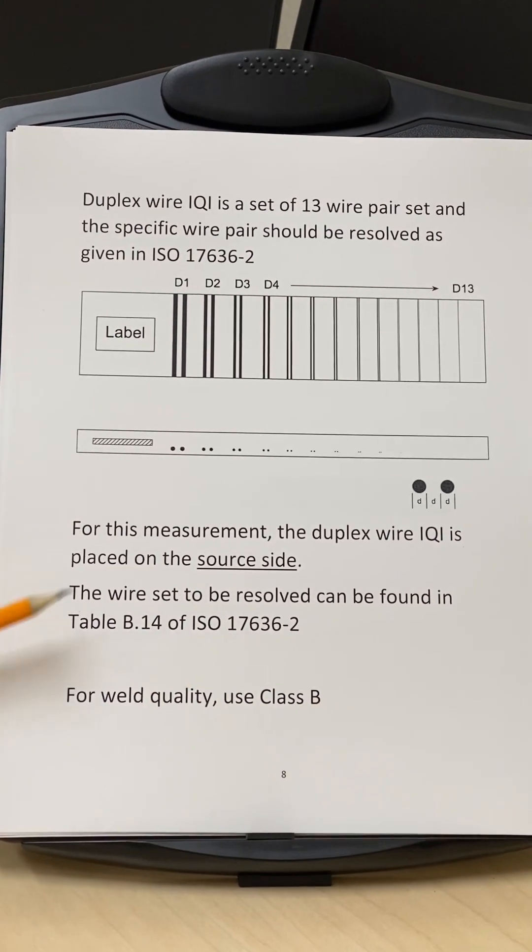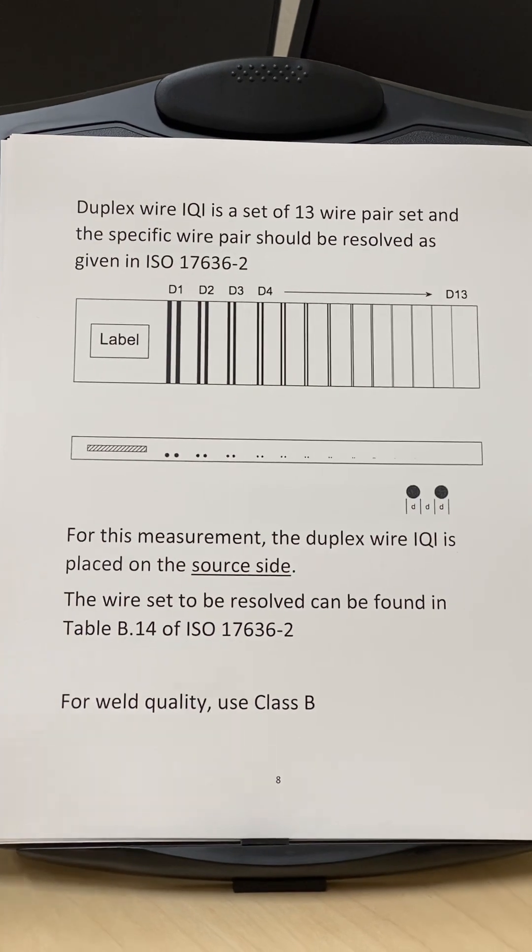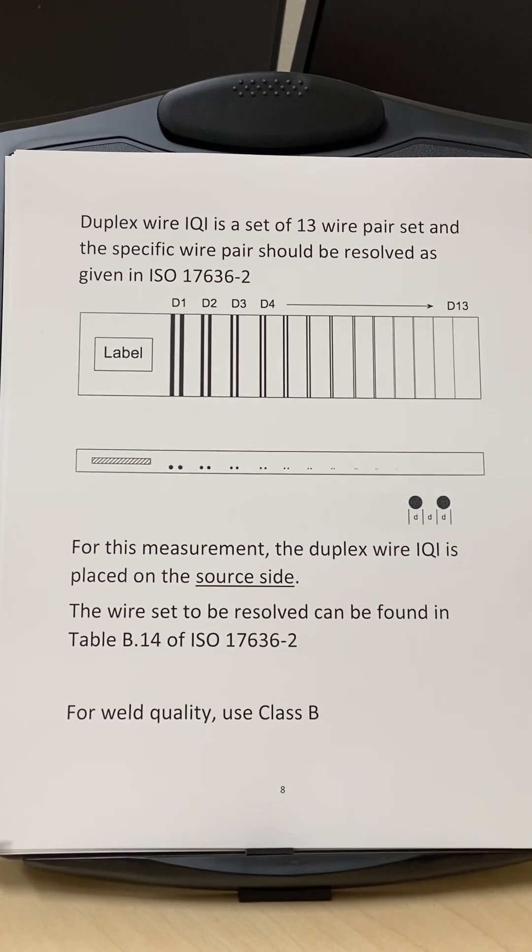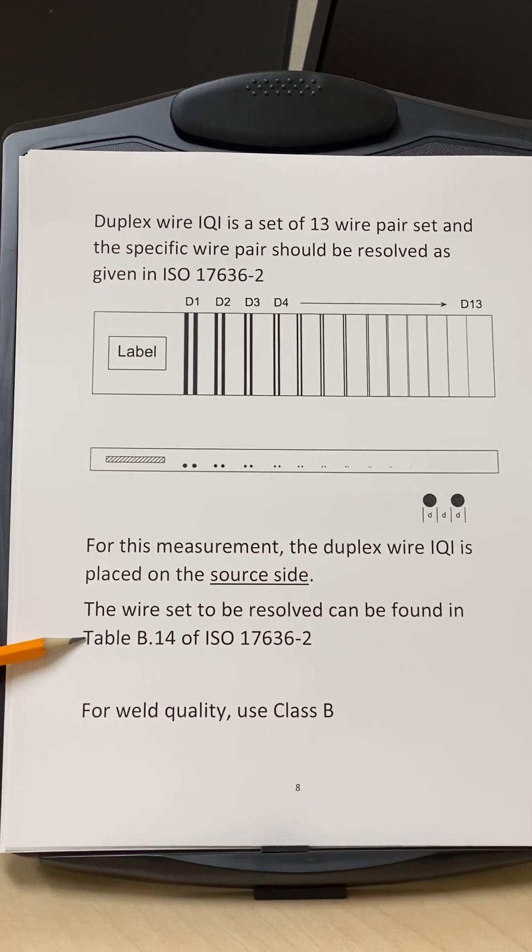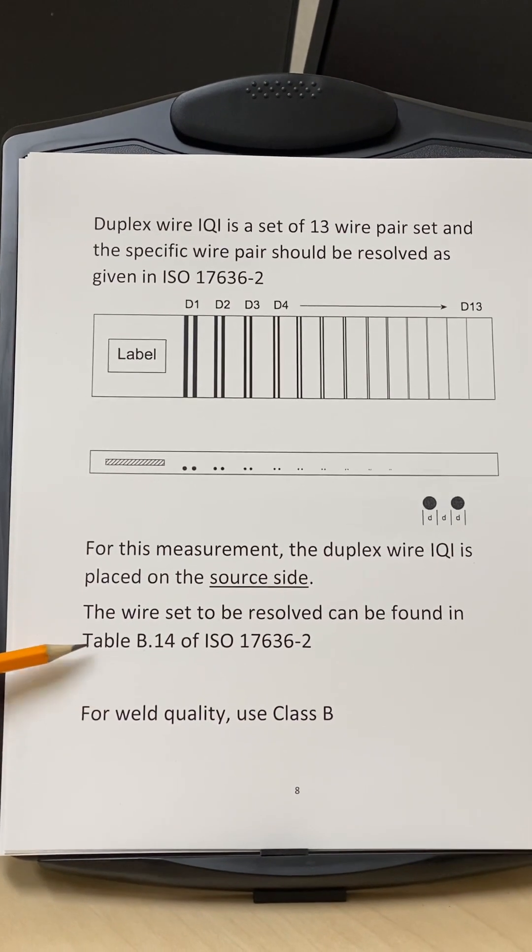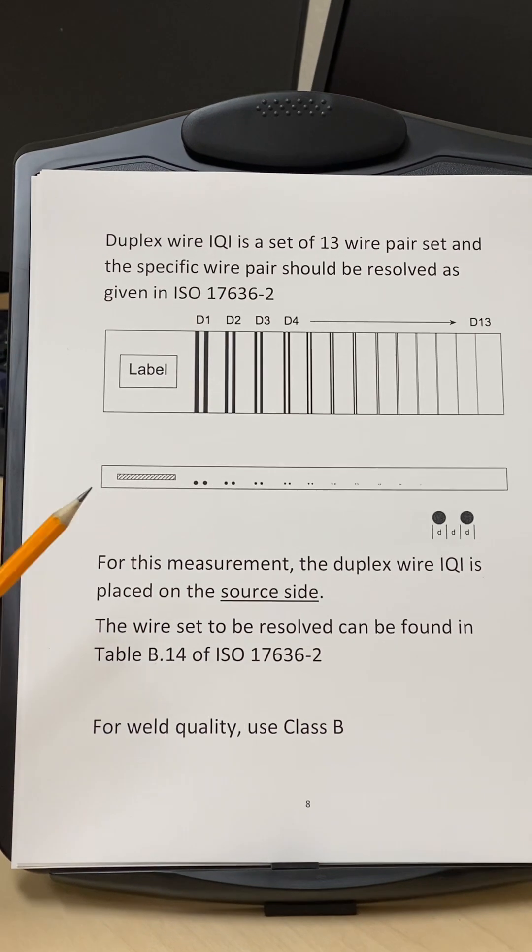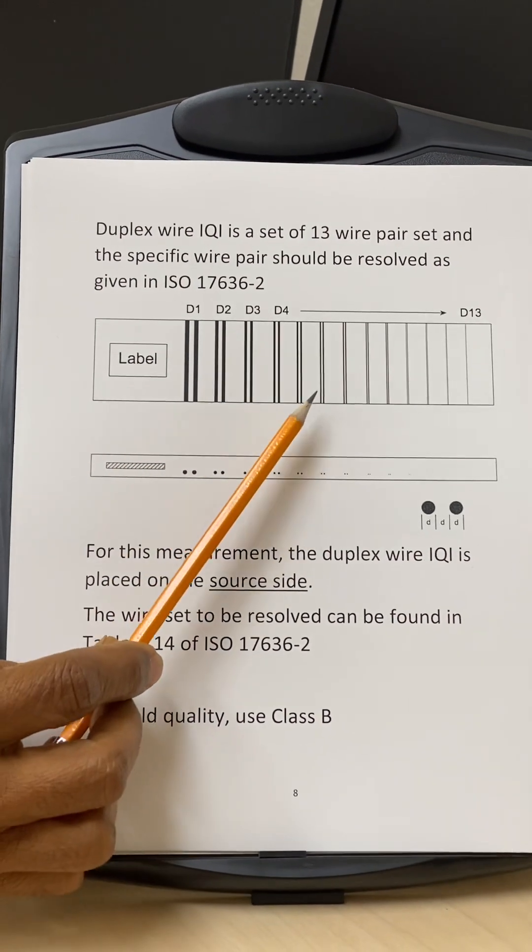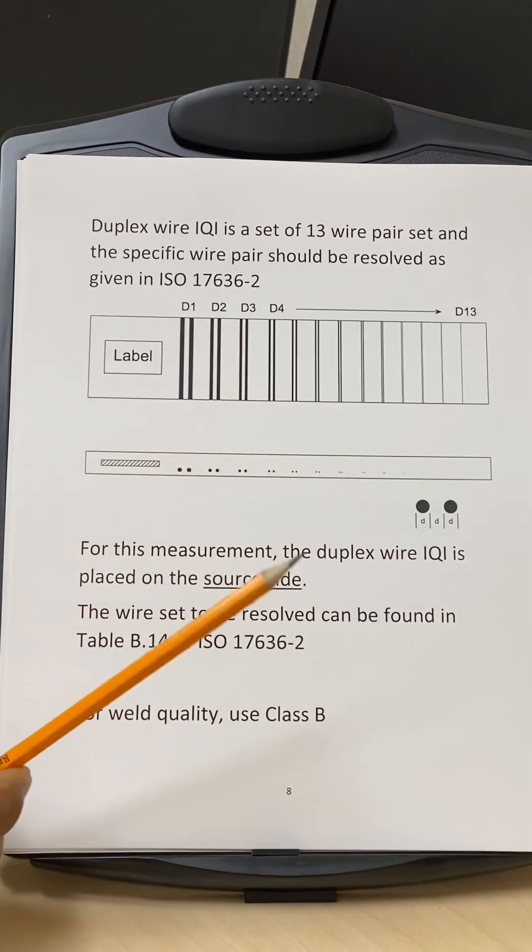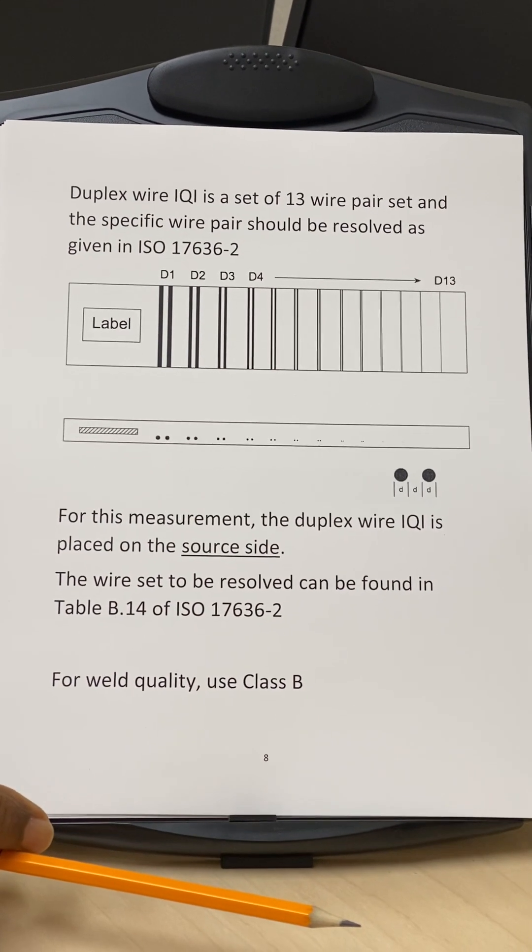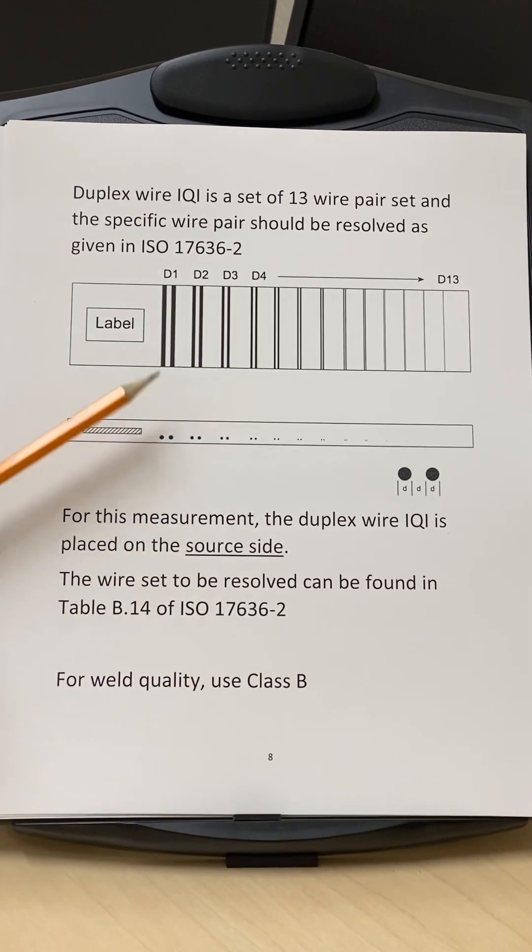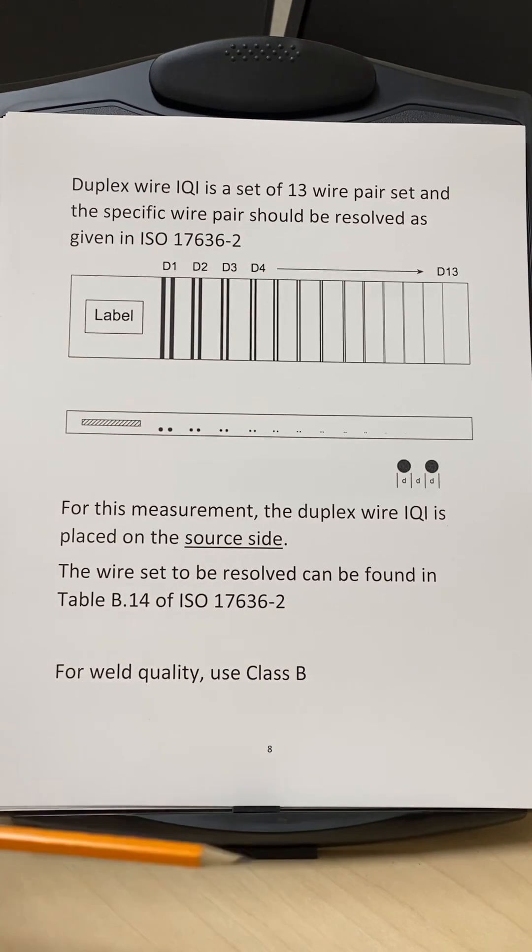And so the wire pair which has to be resolved, for example, if it's half inch or whatever thickness it is, this table will give us - table B14 of ISO 17636-2 will give us the required wire pair or the essential wire pair that has to be resolved in the image. So that has to be done for digital radiography.